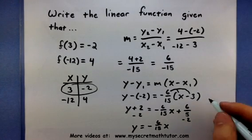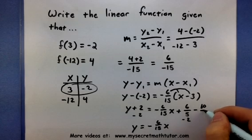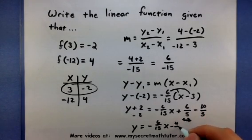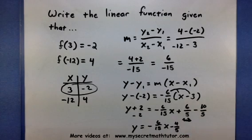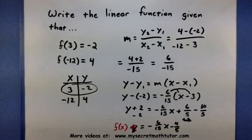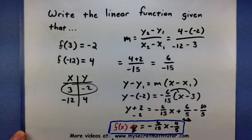What will that give us? 6/5 - 2 is 6/5 - 10/5, which equals -4/5. Now that's pretty good. But when working with functions, we want to make sure that we use function notation. So I'm going to take out this y and replace it with f(x). My final answer becomes f(x) = -6/15x - 4/5.